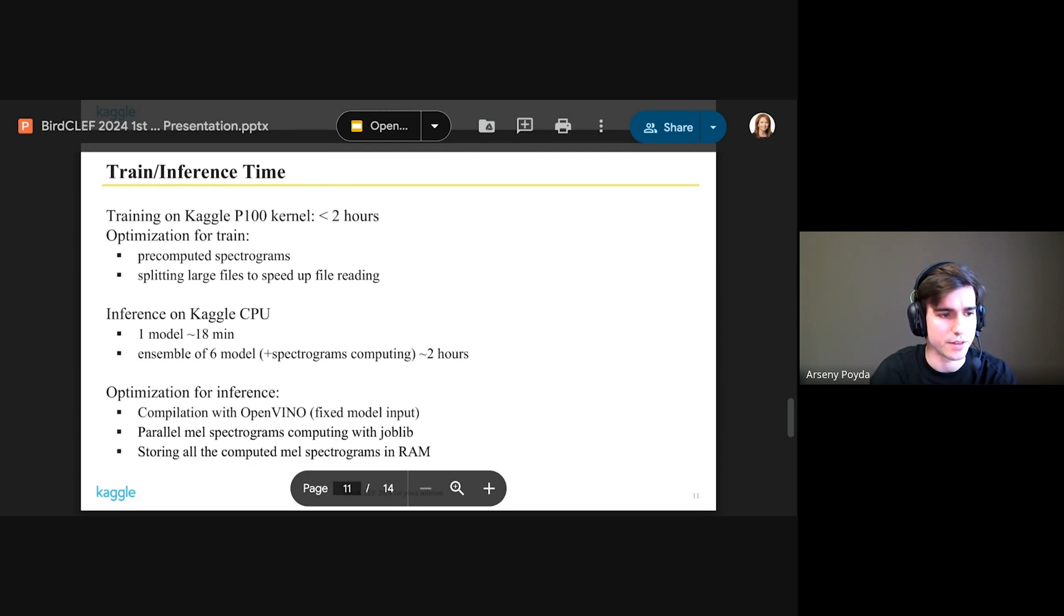We split large files to speed up the rhythm. On inference, we had six models. One model time is about 18 minutes. Finally, we used six models with spectrogram computing and two hours was enough for it.